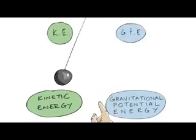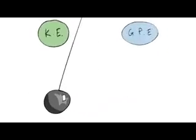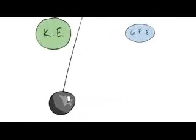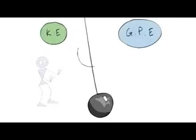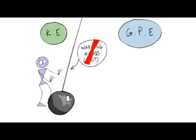Over and over, the energy is transformed back and forth. Gravitational potential energy to kinetic energy. Each swing will be slightly less than the previous one as some energy is transferred to the surroundings, mostly as heat, but not much heat.